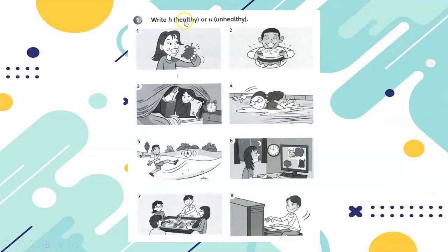Write H for healthy or U for unhealthy. She's eating an apple. Healthy. Number 2, he's eating a burger. Unhealthy.